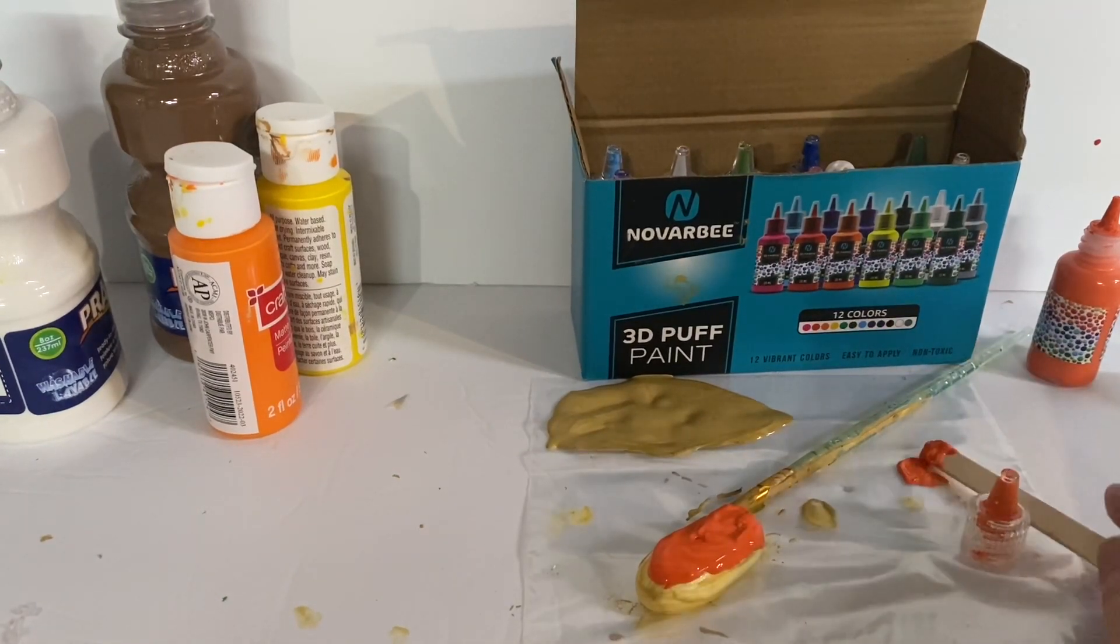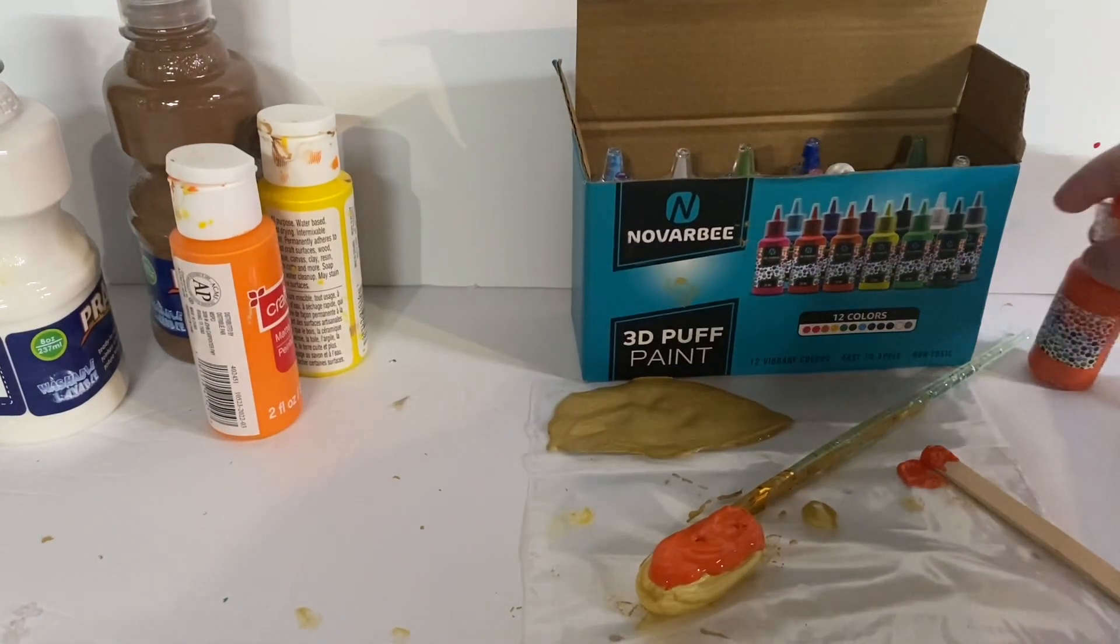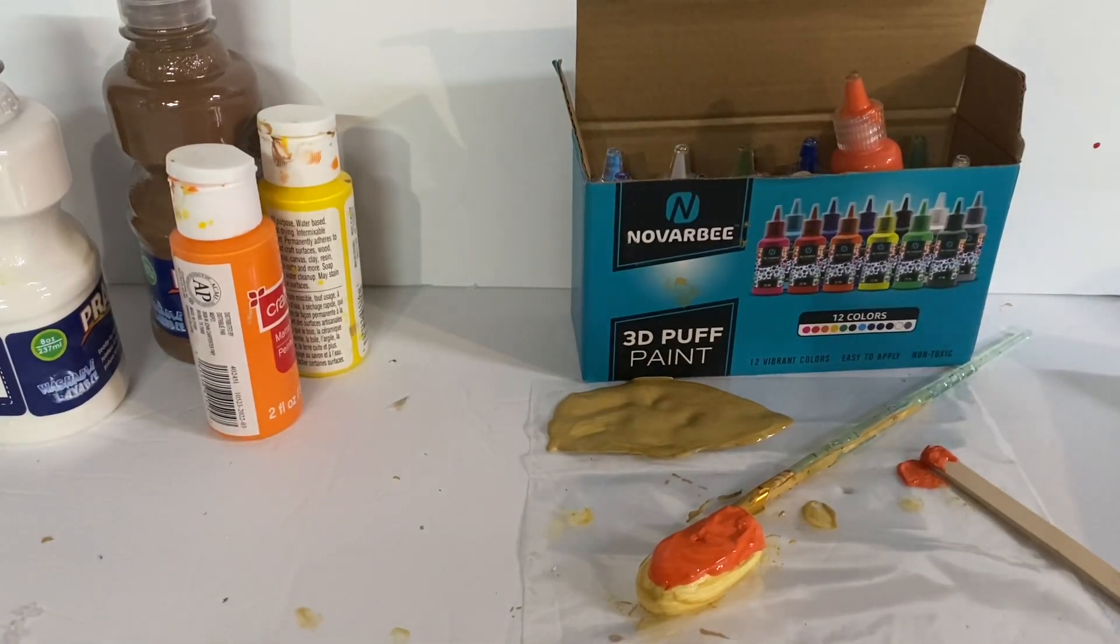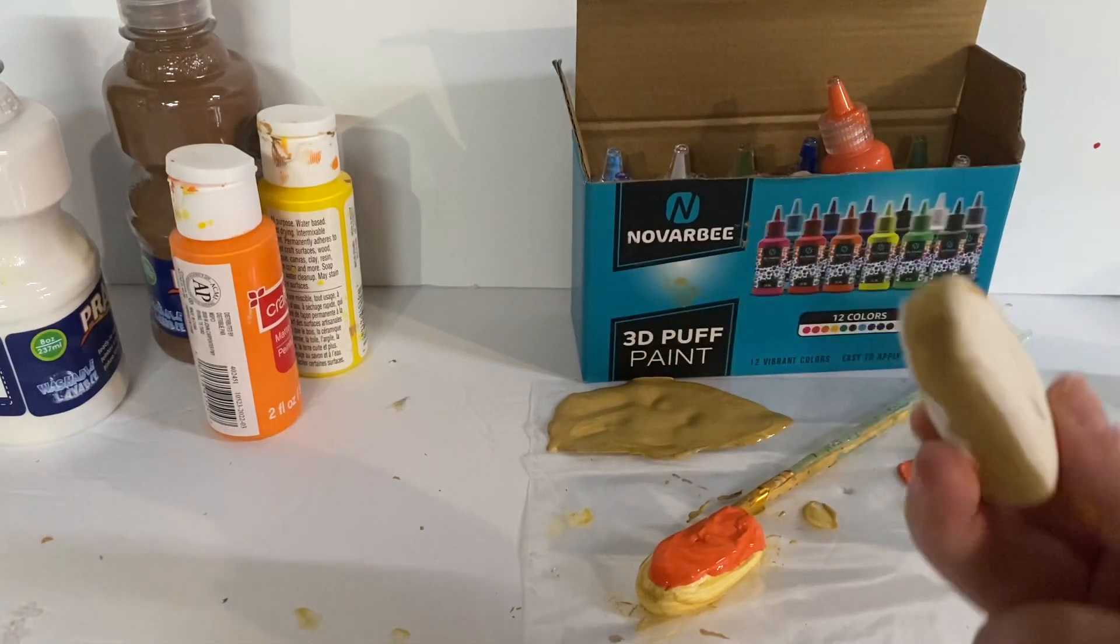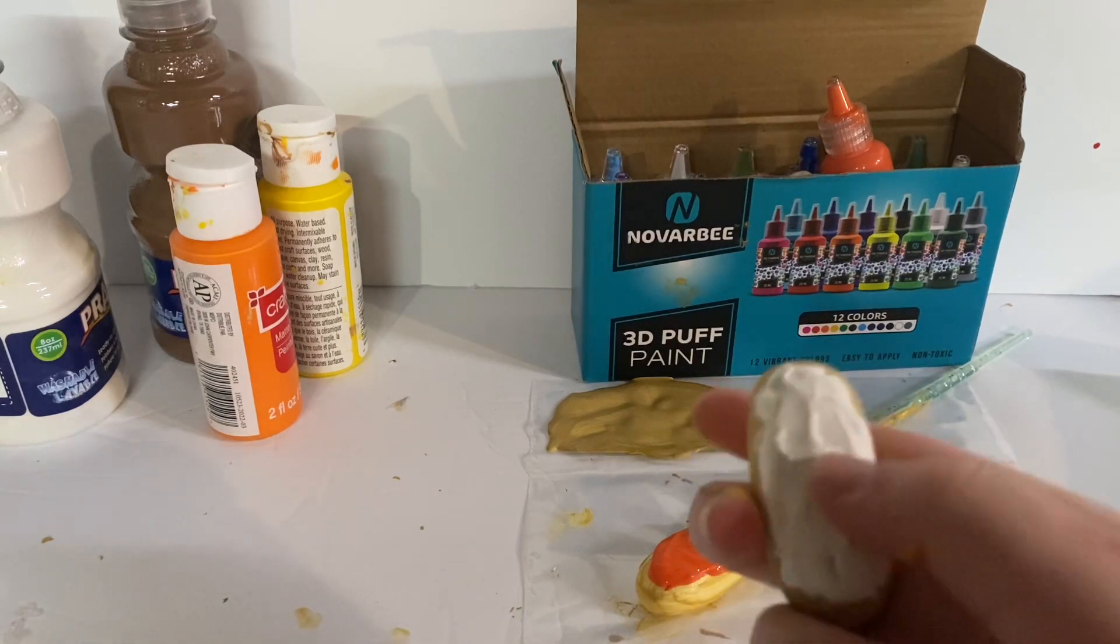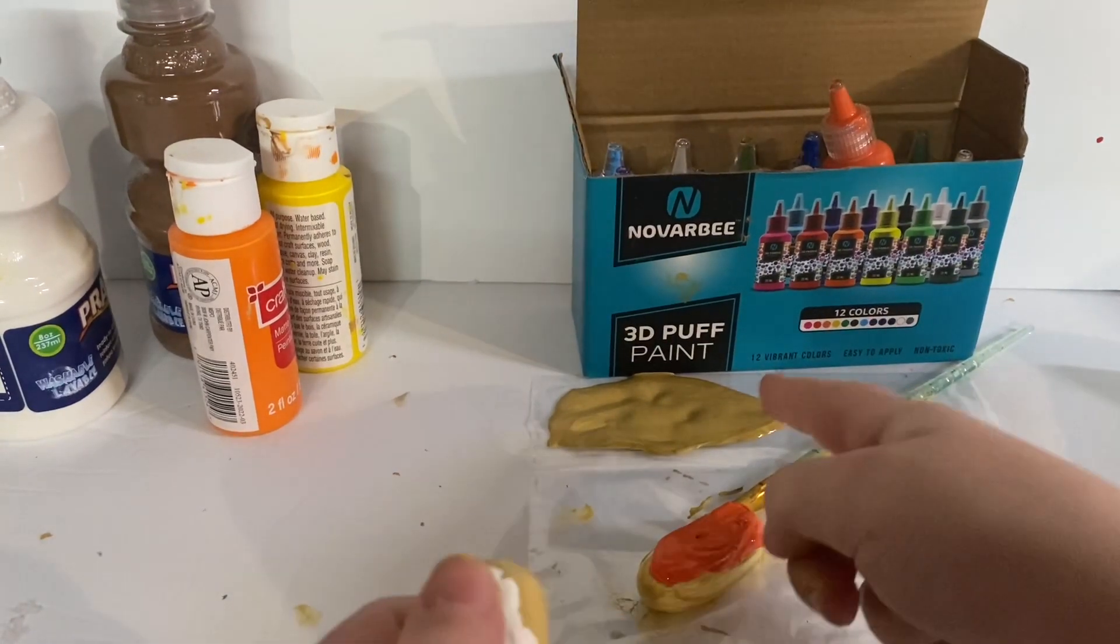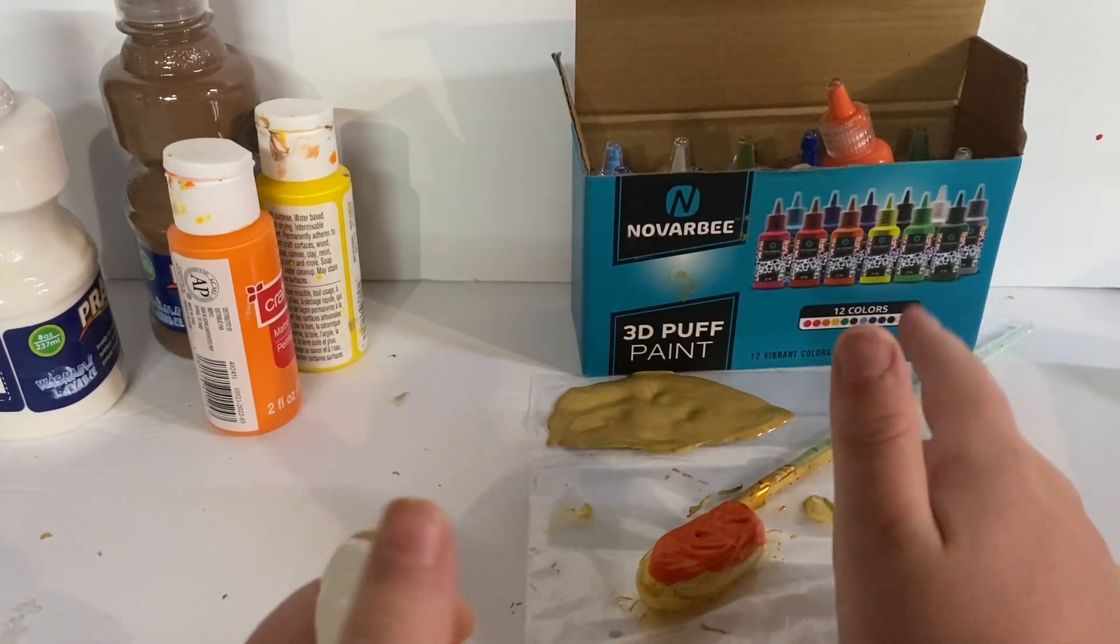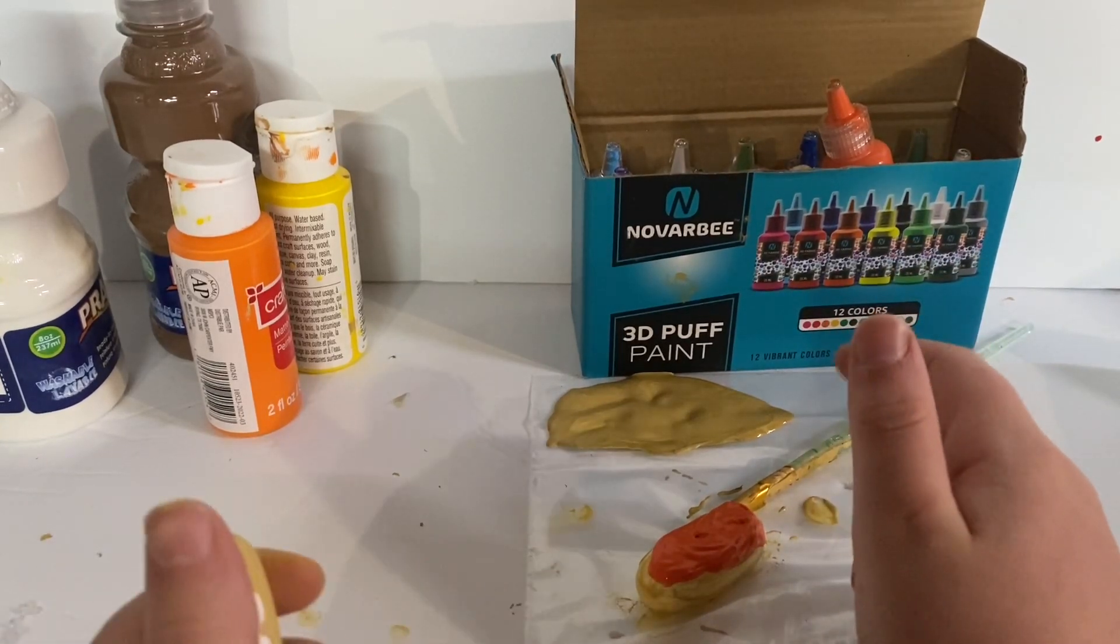But yeah, that's pretty much what you have to do for this. So also, you can even put like sprinkles on it if you like. Like, and it will actually, if you have this 3D puffy paint, I recommend you to get that. Except it doesn't come as brown, so I was kind of disappointed when it didn't.